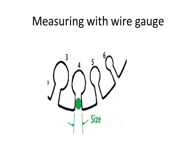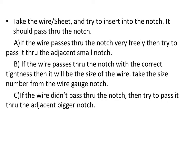For measuring with a wire gauge: take the wire or sheet and try to insert it into a notch. There are three conditions — if the wire passes very freely, move to the adjacent smaller notch. If the wire passes with correct tightness, that notch number gives the size; read it from the table. If it does not pass, try the adjacent bigger notch.